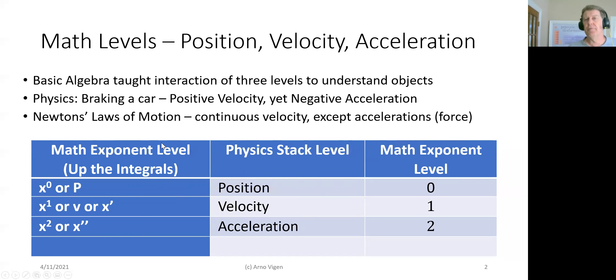We can have all sorts of varieties of these. For example, in physics, we can have a braking car that can have positive velocity but negative acceleration. These levels are independent or related by equations. That's all of what physics is about.